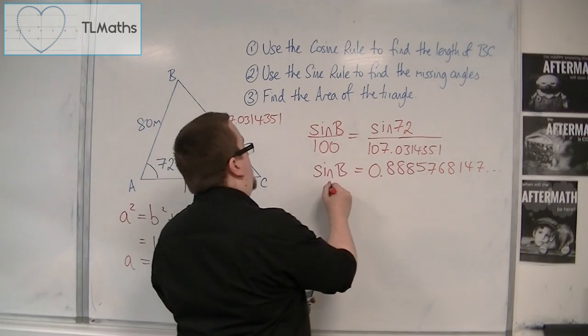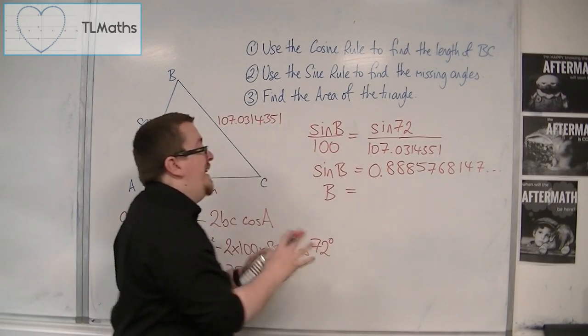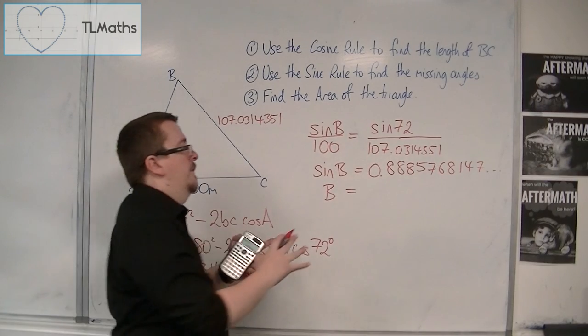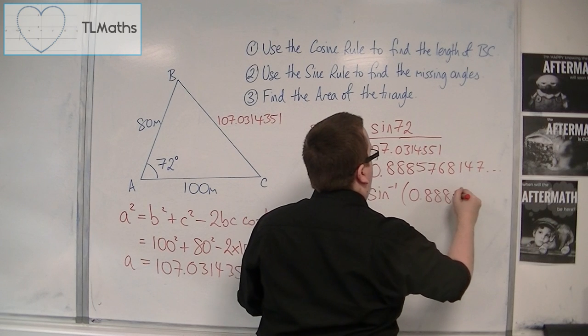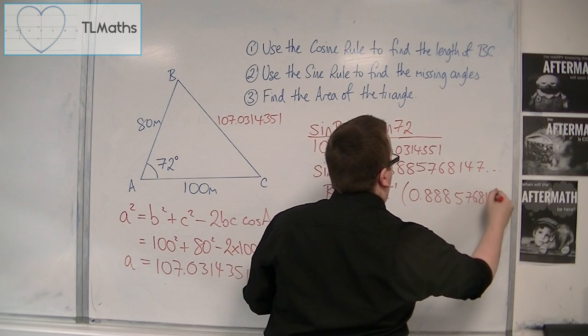And that gives me sine b is equal to 0.8885768147. That's the full calculator display. So, then, in order to get b, the angle b, I'm going to inverse sine this side.